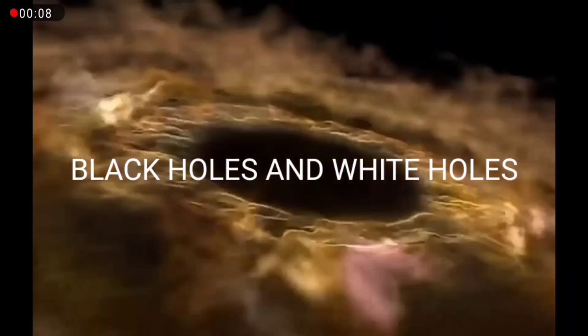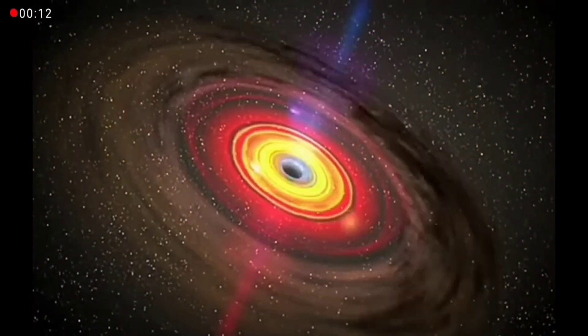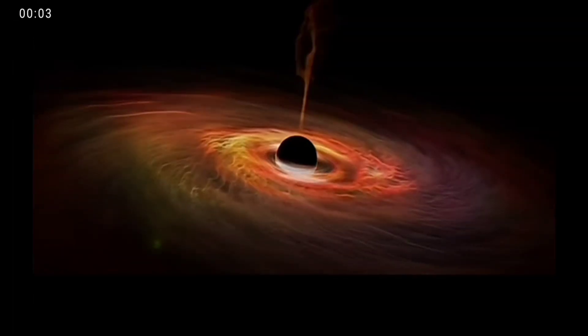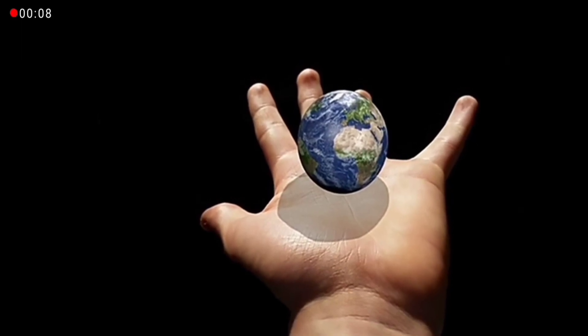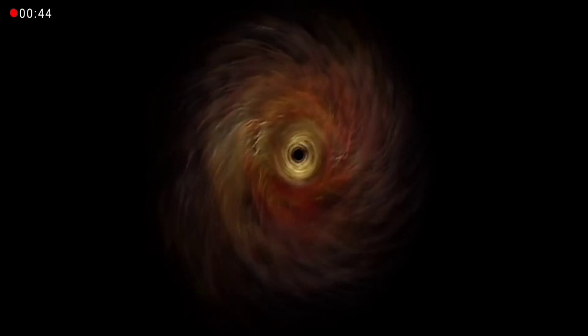First element with which I'm going to introduce you is black holes and white holes. A black hole is a region of spacetime where gravity is so strong that nothing, no particles or even electromagnetic radiation such as light, can escape from it. The theory of general relativity predicts that a sufficiently compact mass can deform spacetime to form a black hole.